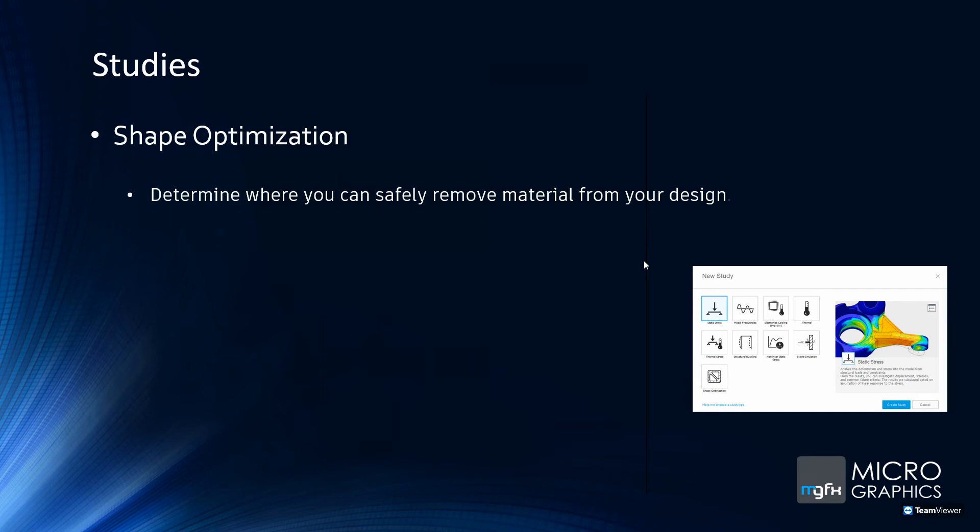Then shape optimization — this is what we're all working toward. The less material in a product, the more cost-effective it is to manufacture. With shape optimization, you apply your forces and say you need this to be 40% lighter. It tells you where you can safely remove material, and then you go back and optimize accordingly.